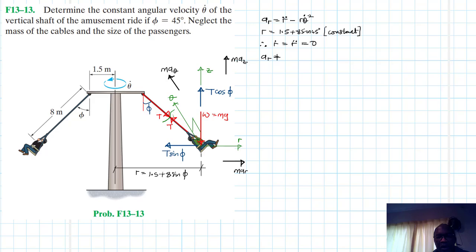Therefore, Ara dot is just going to be equal to Ara double dot, which is equal to 0. Therefore, our A Ara is just equal to minus Ara theta dot squared, which is just equal to minus 1.5 plus 8 sin 45 theta dot squared. Okay.